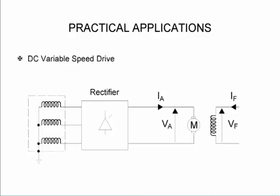What's a practical application of this? A DC variable speed drive. So I have my rectifier which now I control. So now I control the voltage that I apply to the DC motor, which means I can control the speed of the motor.